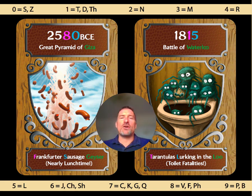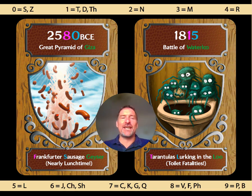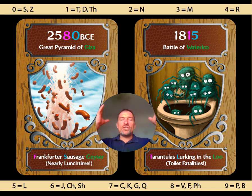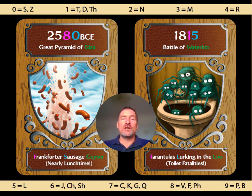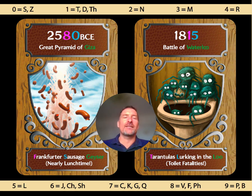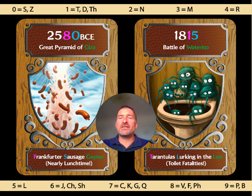The first event is the construction of the Great Pyramid of Giza around 2580 BCE. You just need to remember 'Frankfurter Sausage Giza.' Just stop for a second and imagine a hot jet of sausages whooshing out of the ground in front of you — it's pretty hard to forget. The other event is the Battle of Waterloo, where British and Prussian forces led by the Duke of Wellington finally defeated Napoleon Bonaparte and his French army. 1815 is encoded in 'tarantulas lurking in the loo.' Again, pretty hard to forget.